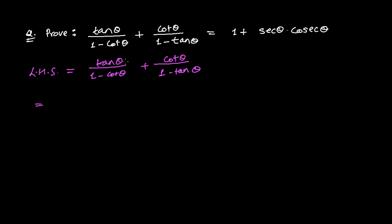Here we have tan theta and cot theta. We'll try to convert them into sine and cosine form. And anyway, if you have sec, cosec, tan, or cot — anything — try to convert them into sine and cosine. That always makes it easier.